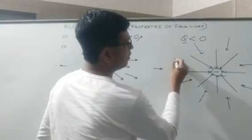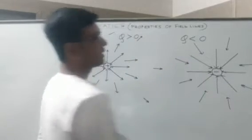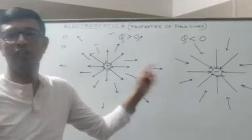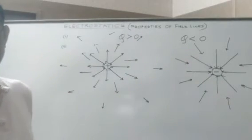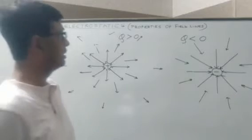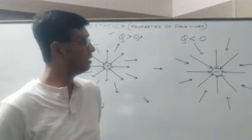So this is how the field lines can be plotted for a negative source charge. These are very important properties.